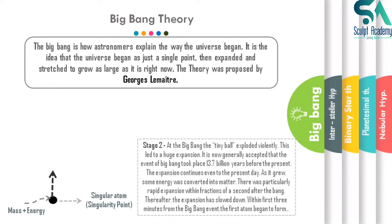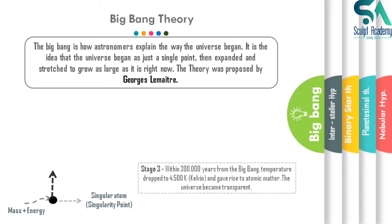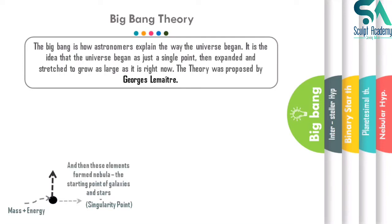Helium and hydrogen were formed, and through permutation and combination of their atomic numbers, the complete atomic periodic table as we study today was built. With combinations of helium and hydrogen, a number of elements were formed. These elements formed a cloud of dust known as a nebula, and these nebulae were the starting point of galaxies and stars.